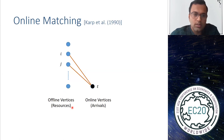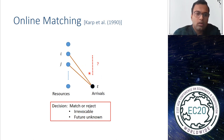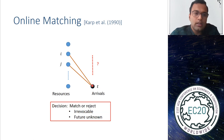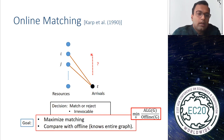The online side vertices arrive one by one sequentially. When a vertex arrives, you see all the edges incident on that vertex. The decision you have to make is that whenever a vertex arrives, you either need to match it to one of the available resources that has an edge to the arrival, or you reject the arrival. The decision is irrevocable, and you make it without knowing anything about future arrivals.